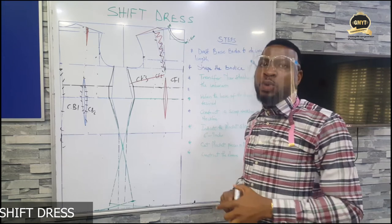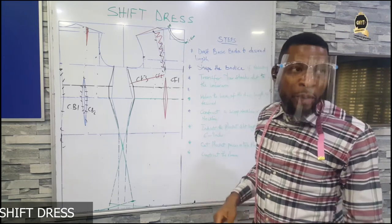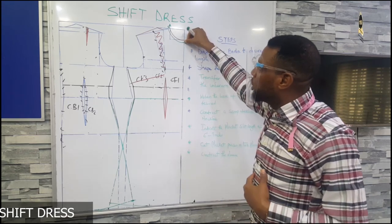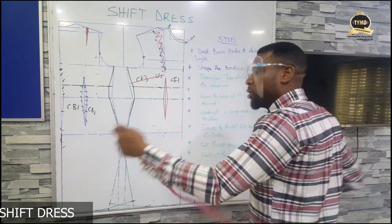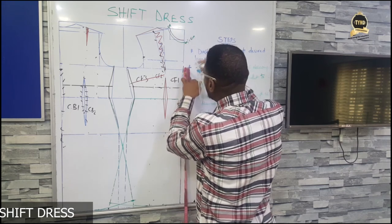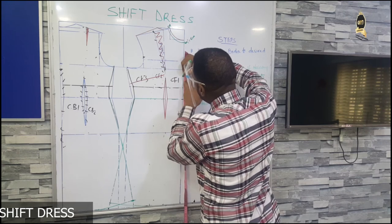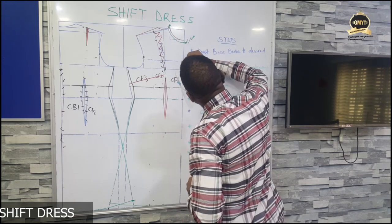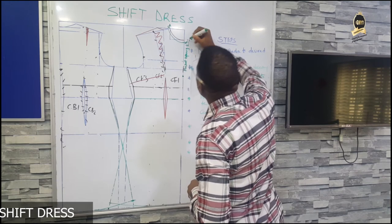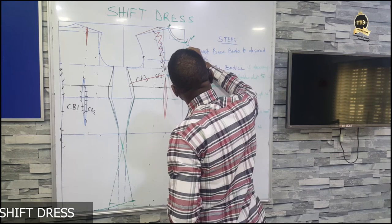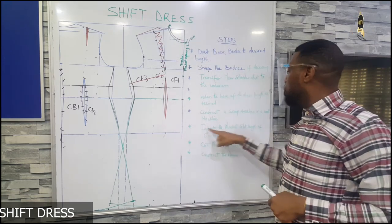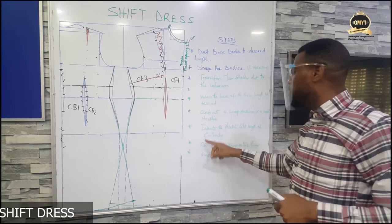Now the next step is to indicate the placket length. The placket length varies based on your choice of placket opening and design. We are going to measure down 6 inches for our placket opening length — 6 inches from here. You can also make this 7 inches, but I am making it between 6 to 7 inches as the placket opening length. This is going to be our placket opening length of 7 inches. Once you have interpreted your neckline, you construct the placket — indicate the placket length of 6 to 7 inches.